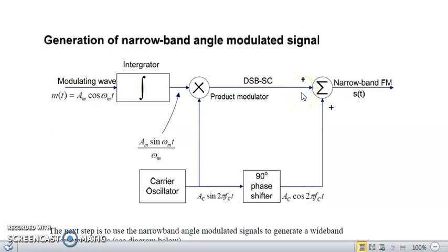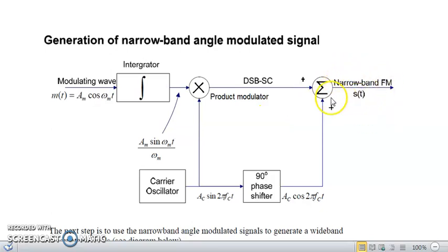Hello students. Last lecture we have seen how narrowband frequency modulated signal is generated through this diagram. We were studying the indirect method of FM generation. In the first step we have to generate a narrowband FM signal, which is just like amplitude modulated generation.